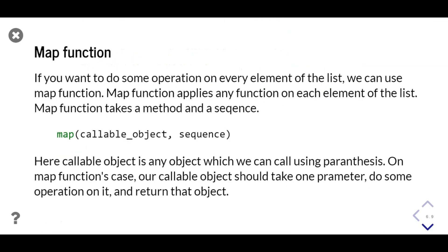The `map` function is a really helpful function in Python. We use it when we want to perform some operation or apply a function to every element in a sequence. `map` takes two parameters: the first is a callable object such as a function name, and the second is an iterable. The callable should take one parameter and return some object. `map` returns a map object, similar to what `range` returns — we need to iterate over it by passing it to the `list` function.